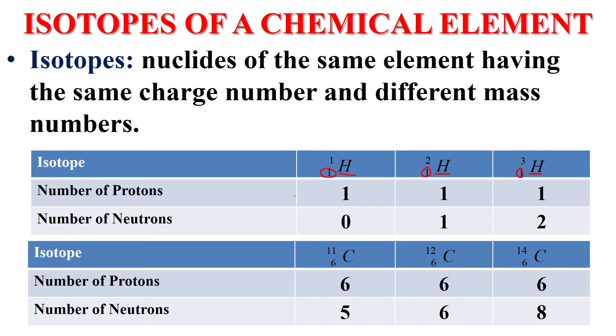Now let's find the number of protons and the number of neutrons in each of these nuclei. The number of protons is Z. That means they all have one proton. The number of neutrons is A-Z. So here it turns out 1-1=0, 2-1=1, and 3-1=2.